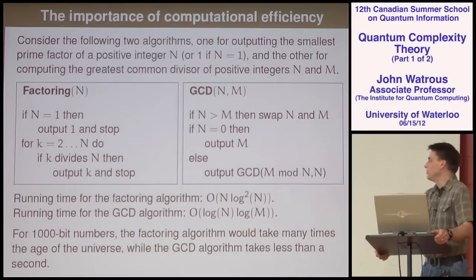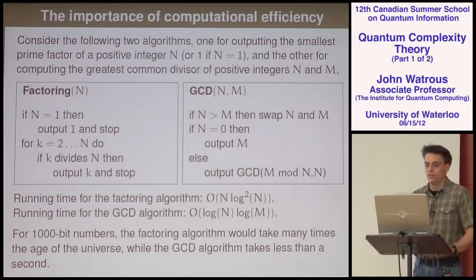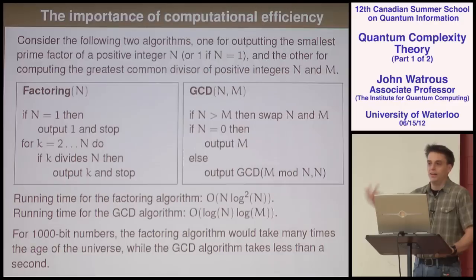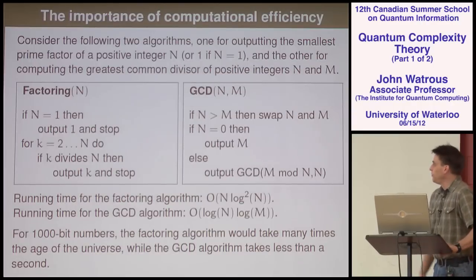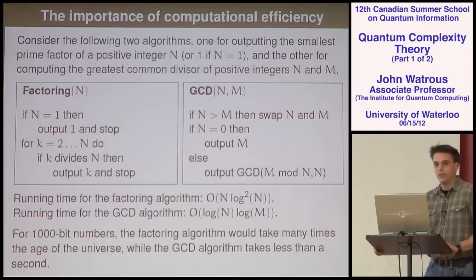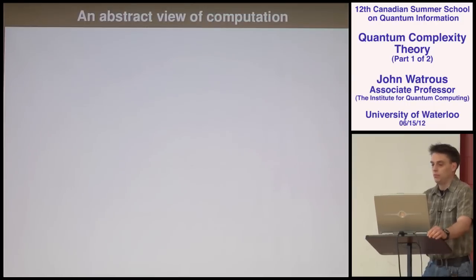Of course it depends on the machine, but on this machine here — which has a case of Windows rot and is very old — I press enter and get the answer before I've noticed any time has elapsed for a 1,000-bit number. So it's extremely efficient. The point is that it's certainly not good enough to just have an algorithm for some task. An algorithm is really only worth something if it's an efficient algorithm. This is what, at some level, computational complexity is about.